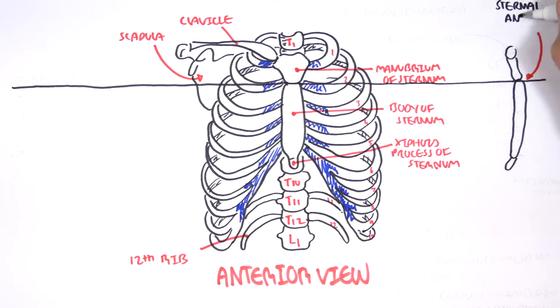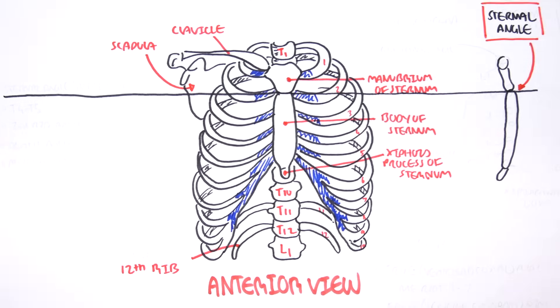On this side view of the sternum, we can see the insertion points of the ribs. Rib one attaches onto the manubrium, rib two to the sternal angle, rib three to six to the body of the sternum. And here is the xiphoid sternal joint.